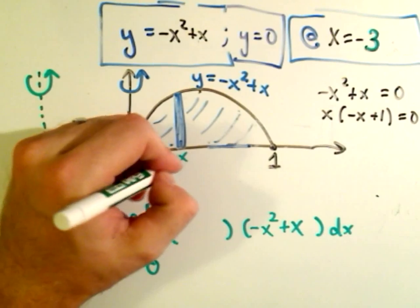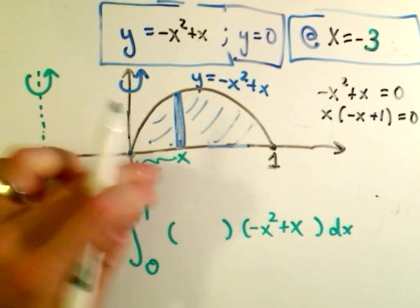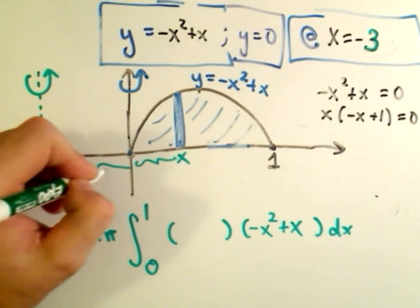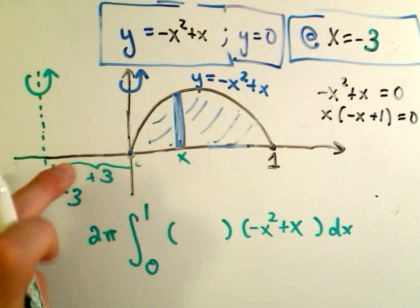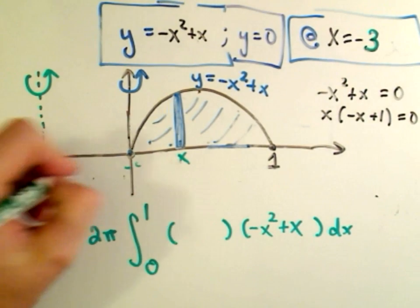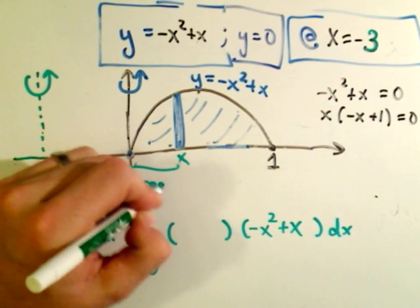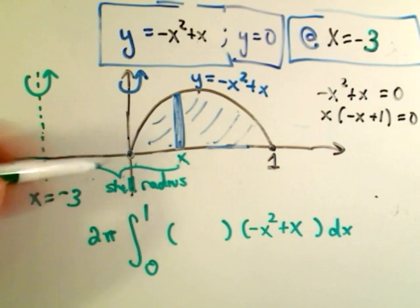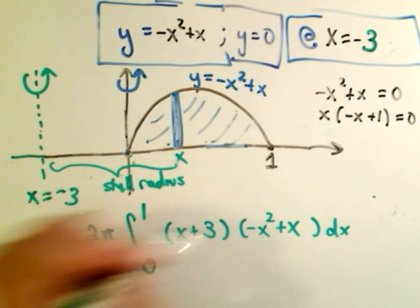Right now I'm at some distance x. The distance just to get back to the y-axis would be x. And then I would have to go another positive 3 units to get over here to the line x equals negative 3. So this entire length is what's going to be the shell radius. In this case, the shell radius would be x plus 3. Don't be thrown off by the fact that it's negative 3. Think about this in terms of distances. Negative 3 is 3 units away, plus another x units. That'll be our shell radius.